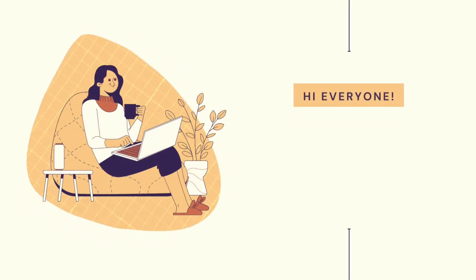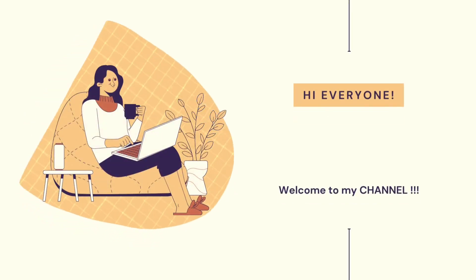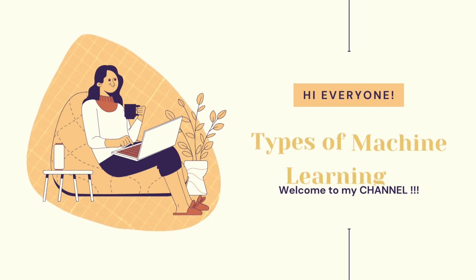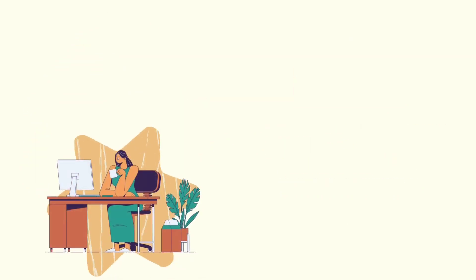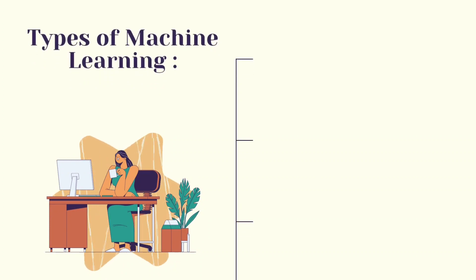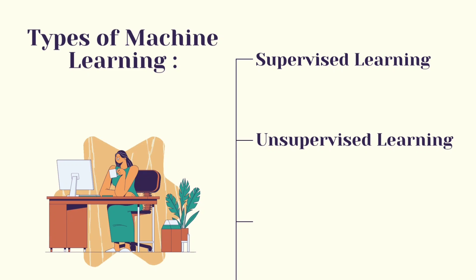Hi everyone, welcome to my channel. In this video we will learn about types of machine learning. Machine learning is sub-categorized into three basic parts: supervised learning, unsupervised learning, and reinforcement learning.